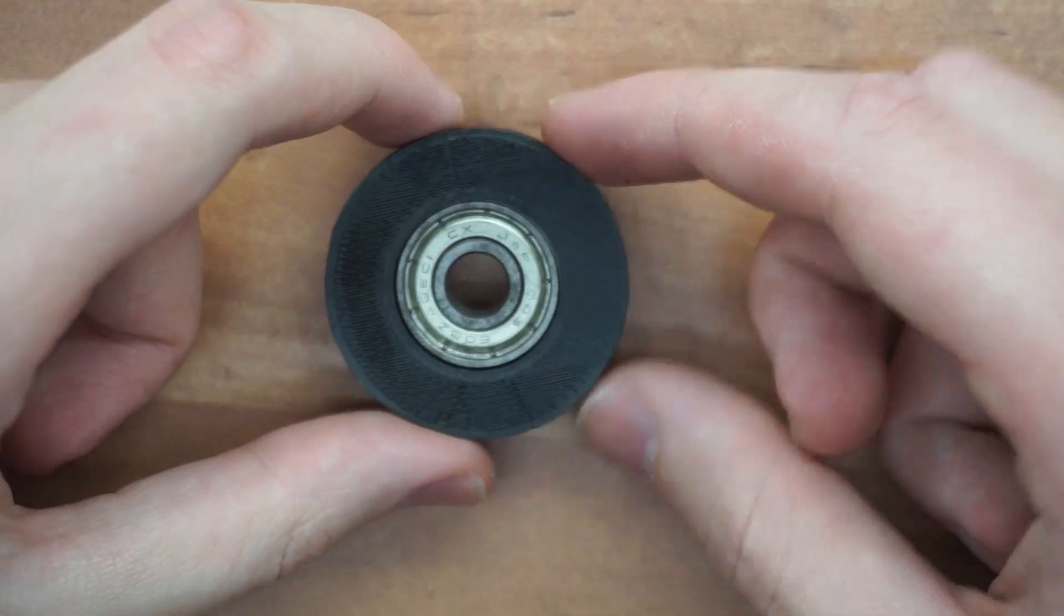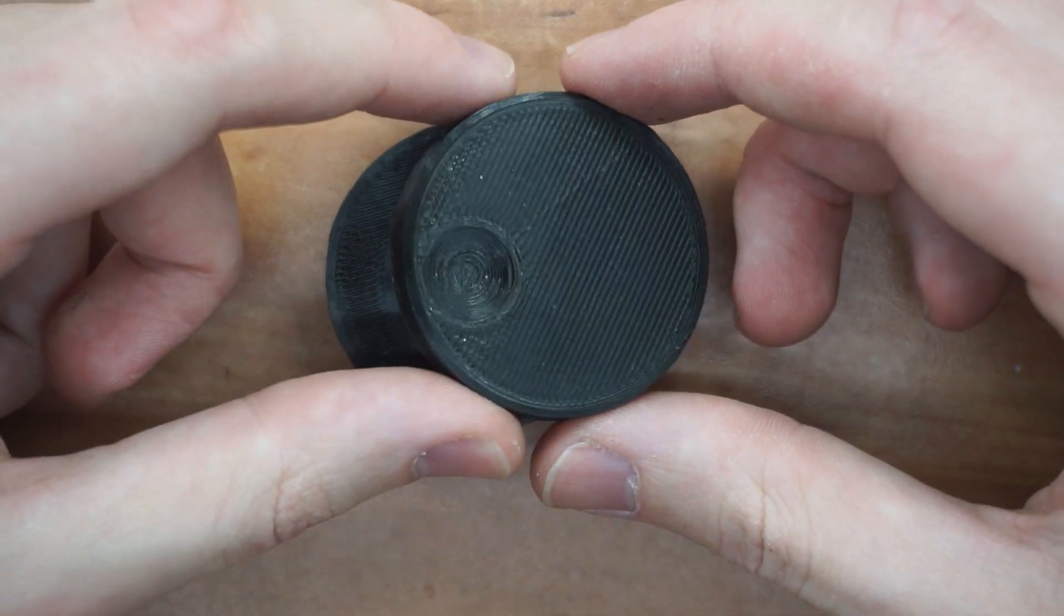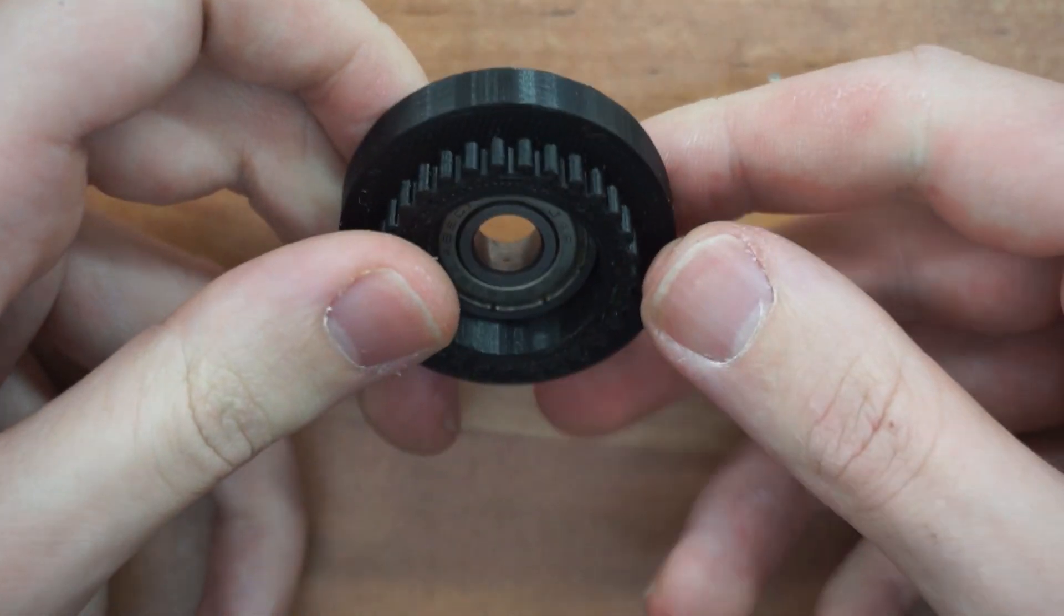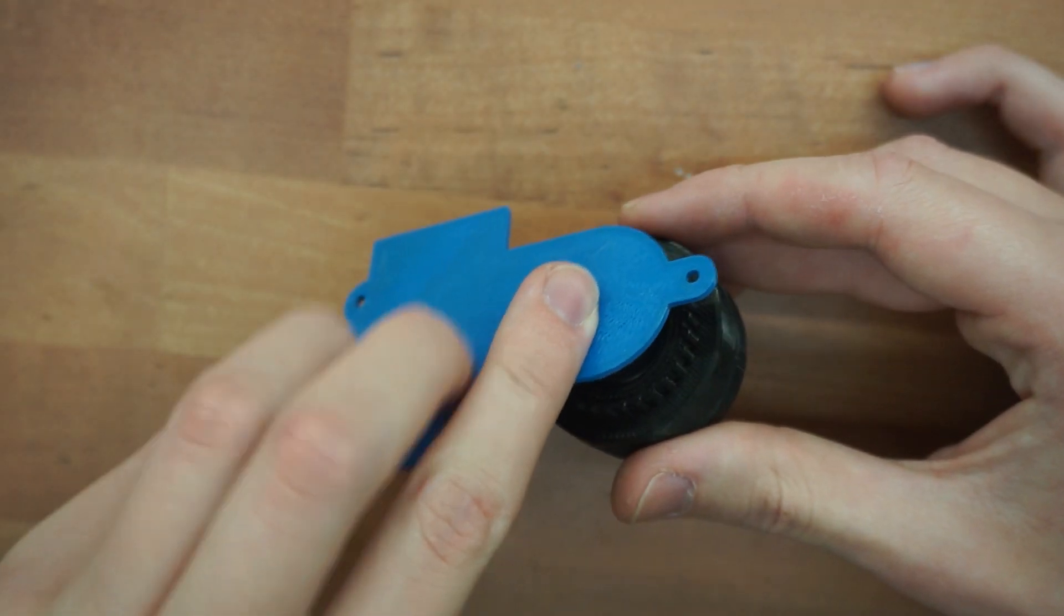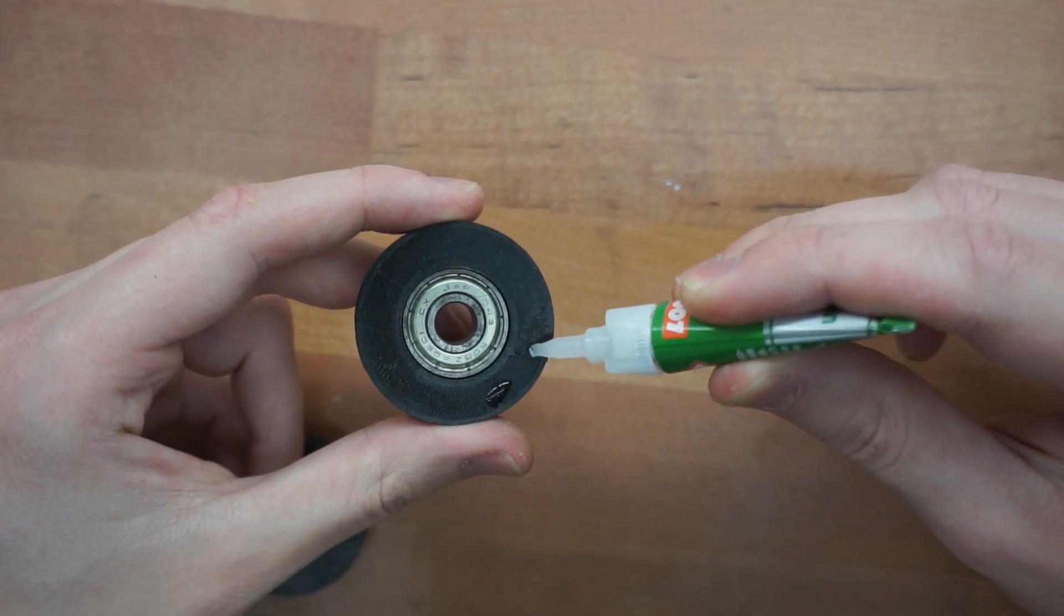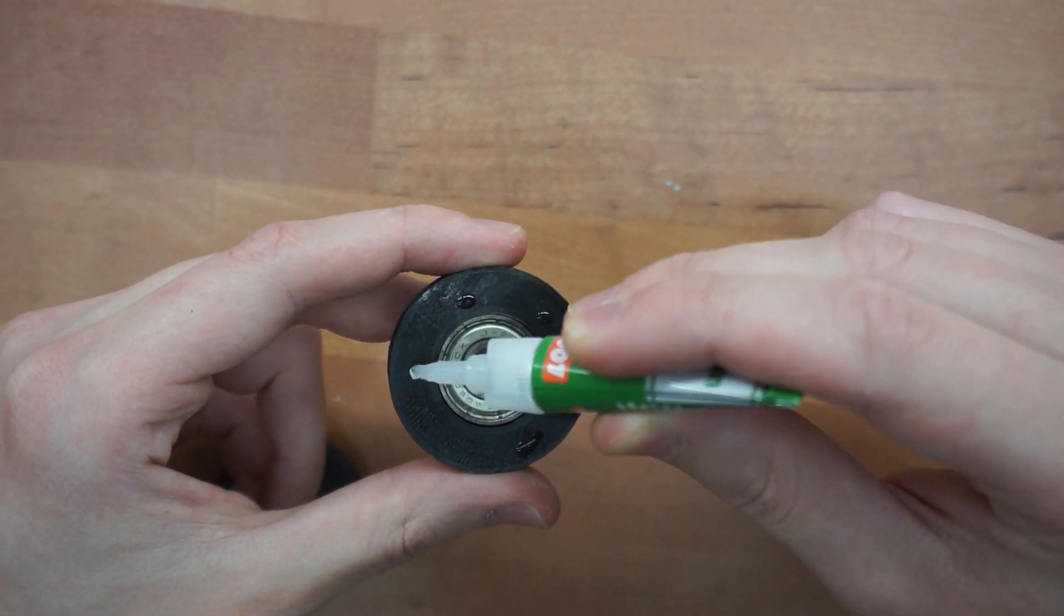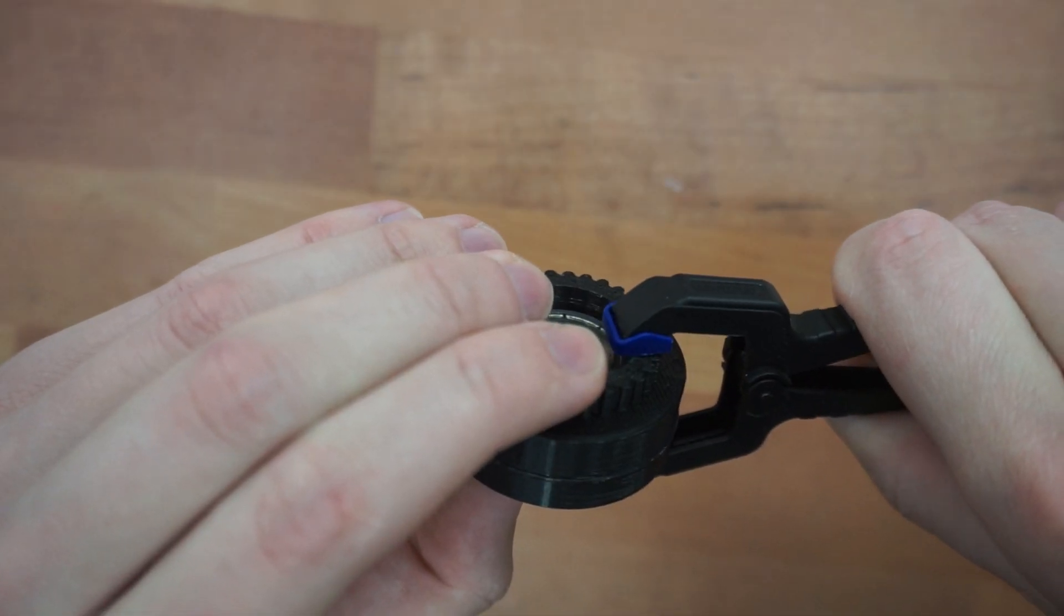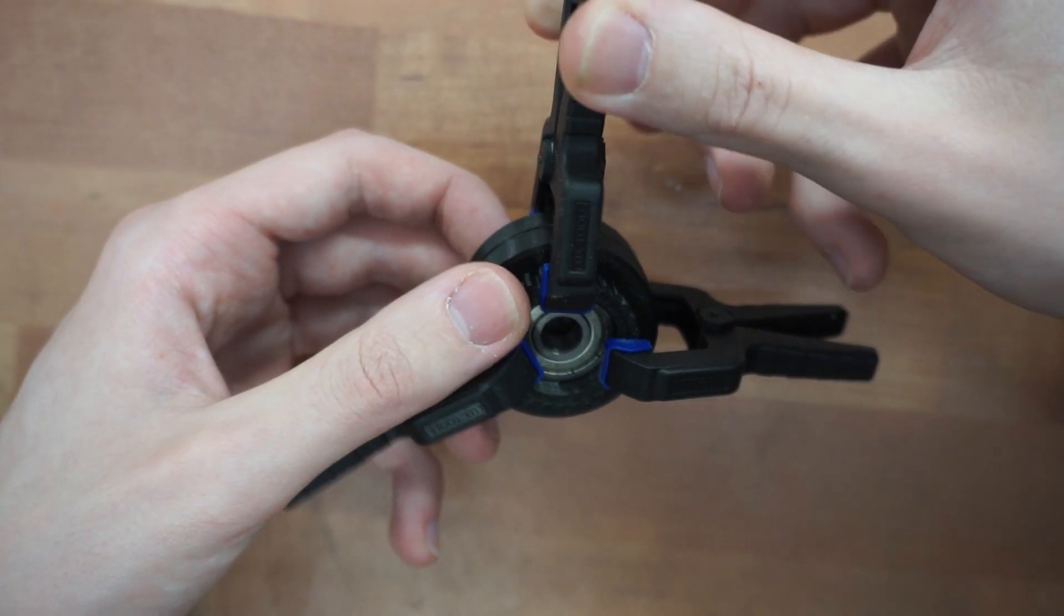As I said, the wheel is two parts, so you can print the bottom part first and insert the ball bearing. Then the wheel can be inserted onto the base, and the top part of the wheel then can be glued in place. Now don't put too much glue on there because you might glue the bearing and it won't spin, so just a little bit.